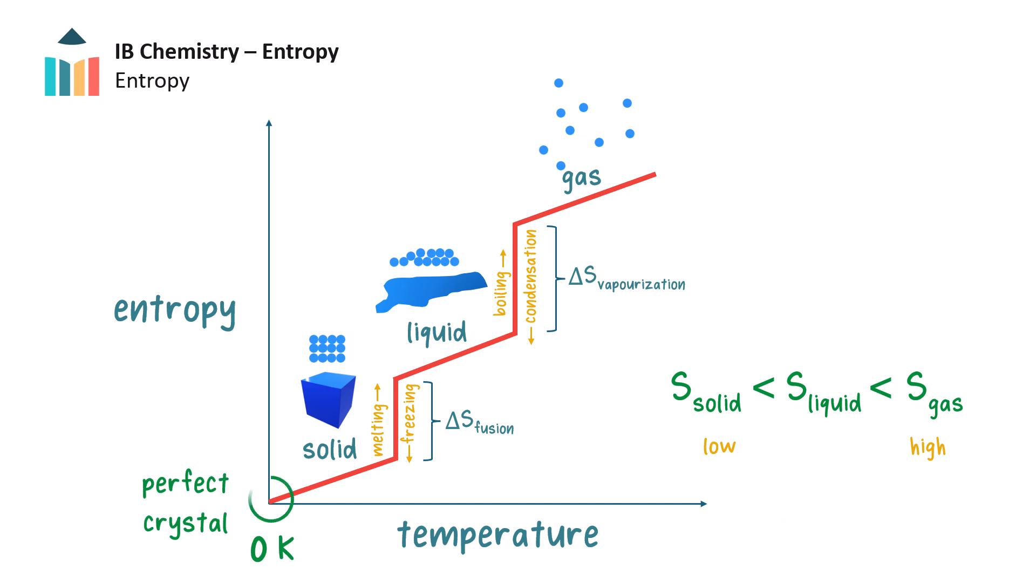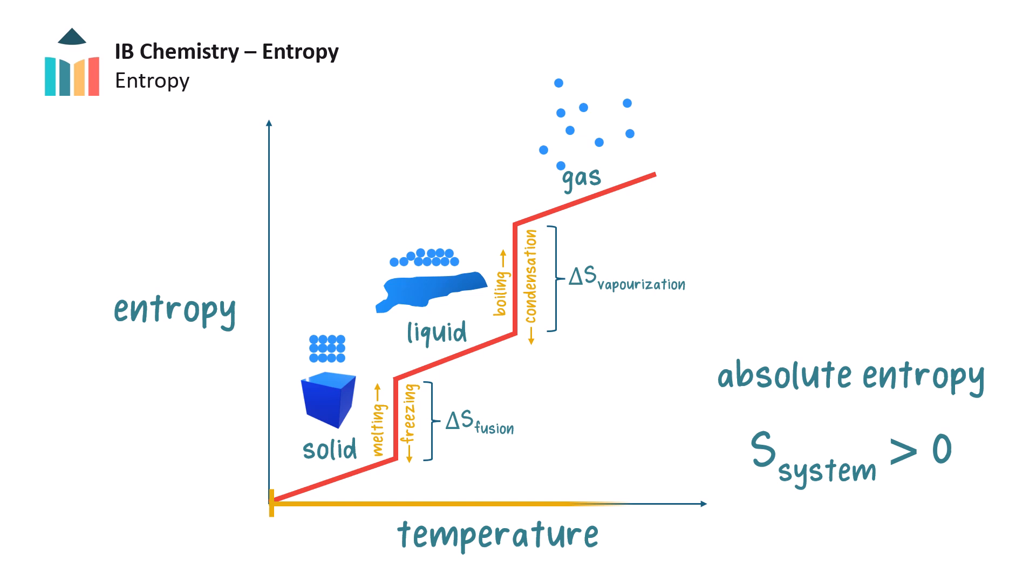A perfect crystal at 0 kelvin is predicted to have an entropy value of 0. This is because at absolute 0, the system does not have any thermal energy. It is in its lowest possible energy state. Particles have no possibility for any movement or different arrangements and so are in their most ordered state. Particles have no disorder. The absolute entropy value of every substance above 0 kelvin is a positive value, since in reality every substance has some thermal energy.